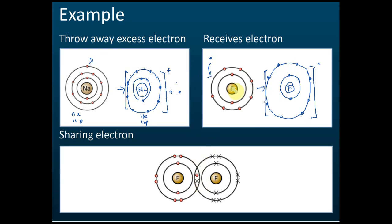Other than throwing away or receiving electrons, atoms can also share electrons. For example, fluorine has seven valence electrons and is not yet octet. Another fluorine also has seven valence electrons. Each fluorine takes out one electron and they share those electrons. After sharing, the two atoms are bonded together and cannot separate — that is how a covalent bond is formed by sharing electrons. This is the third method for atoms to achieve octet.